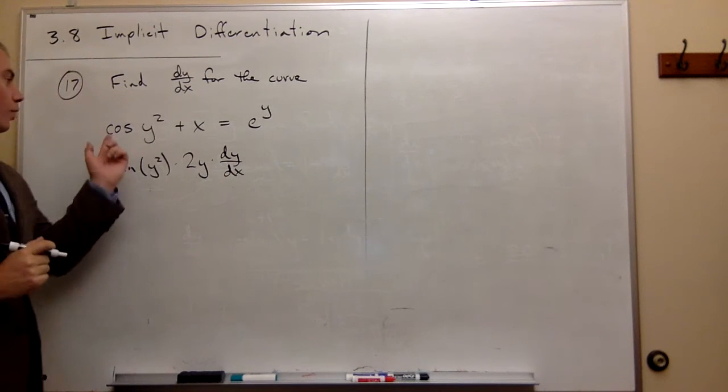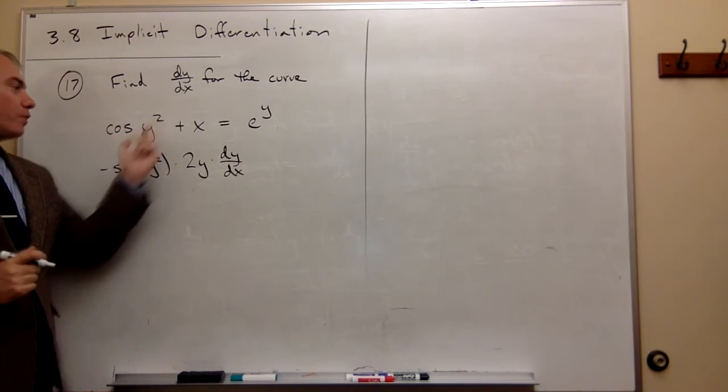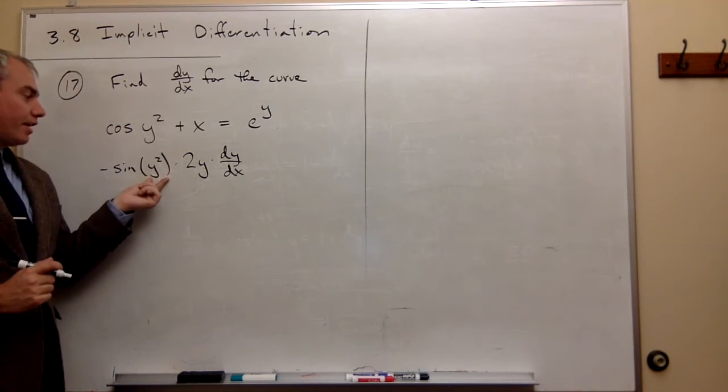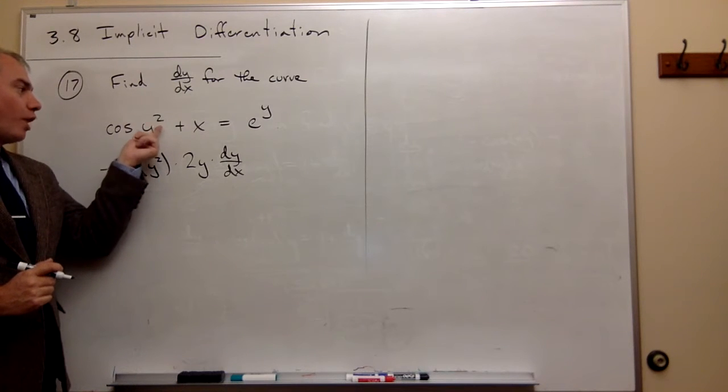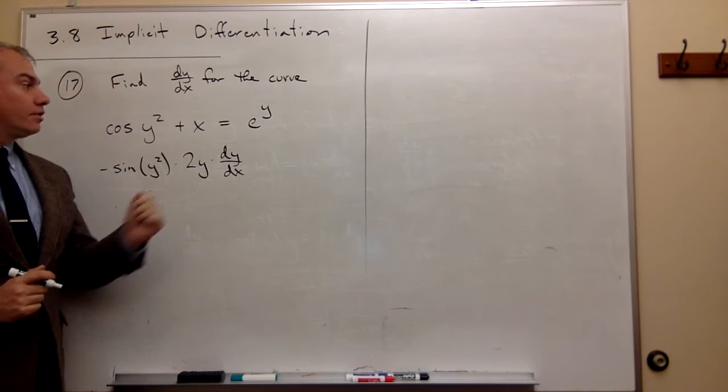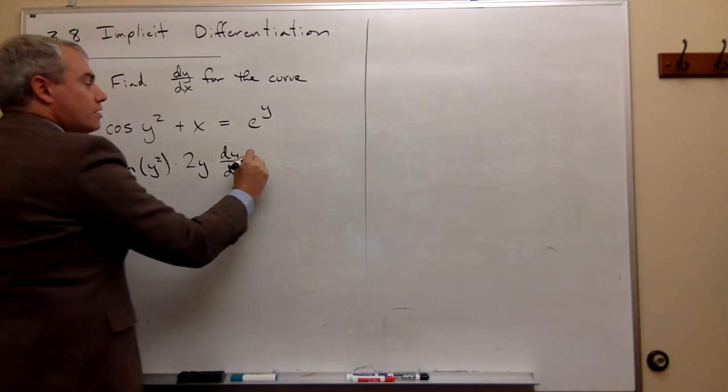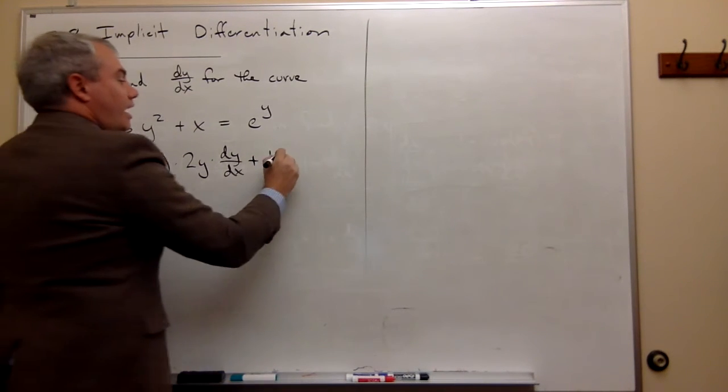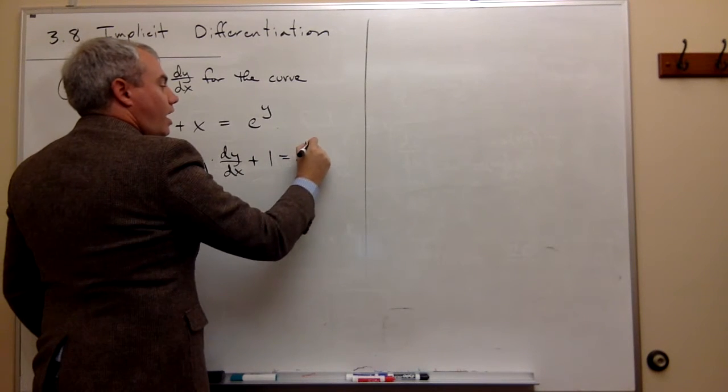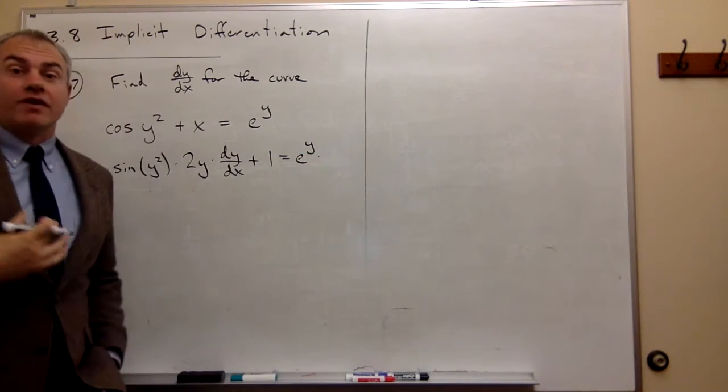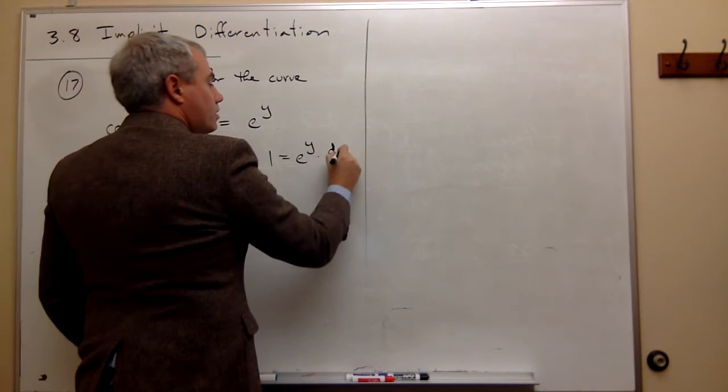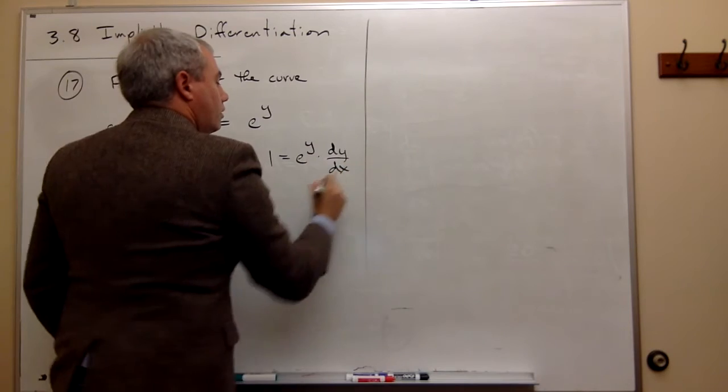So what's the derivative of cos(y²)? The derivative of cosine of something is negative sine of that thing, and then I multiply that by the derivative of y², which is 2y dy/dx. The derivative of x is 1, and the derivative of e^y is e^y times the derivative of y, which is dy/dx.